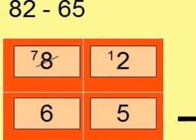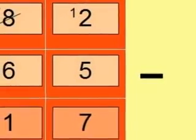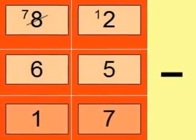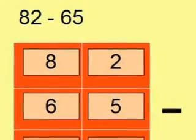Now we can actually perform the sum. 12 take away 5 is 7, and 7 take away 6 is 1. Let's move on to the second method.